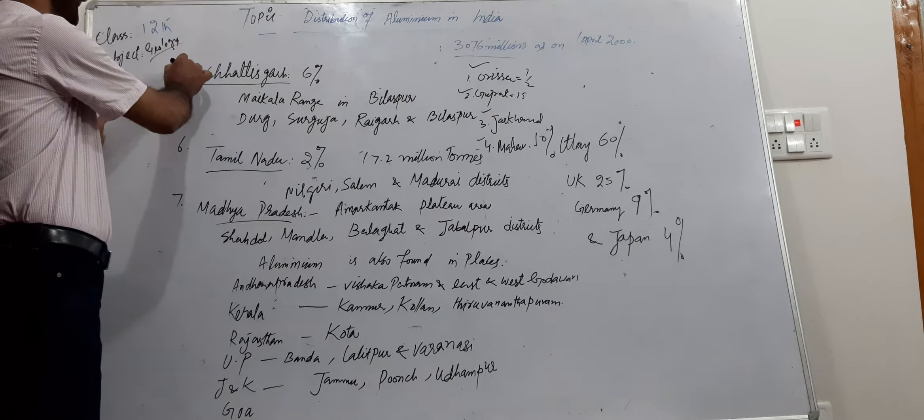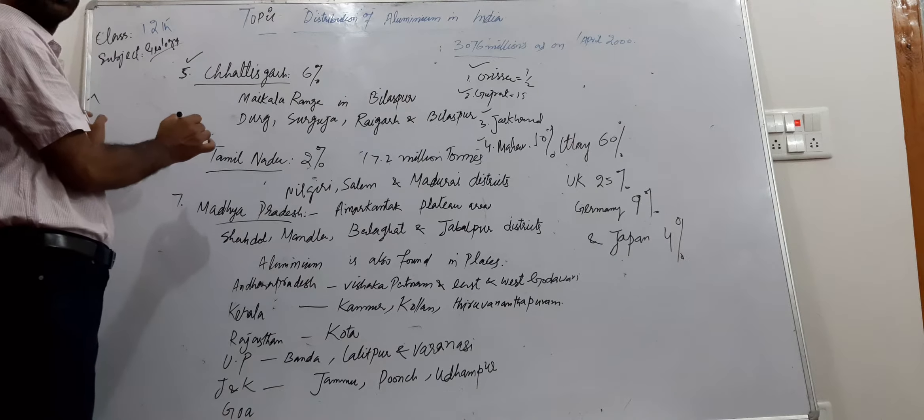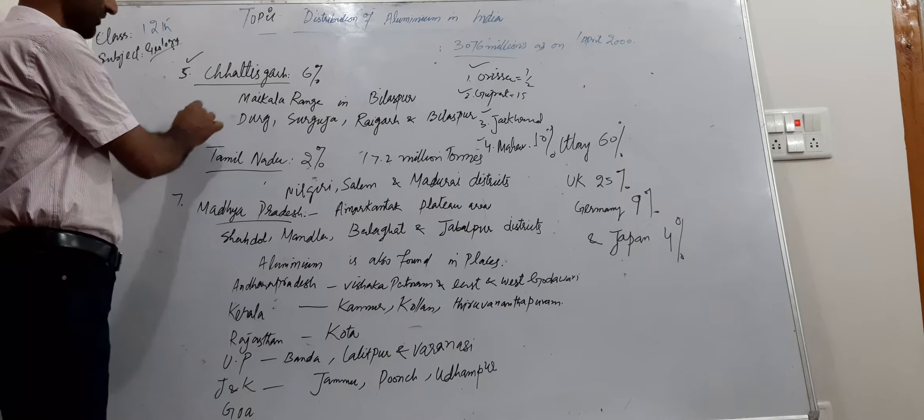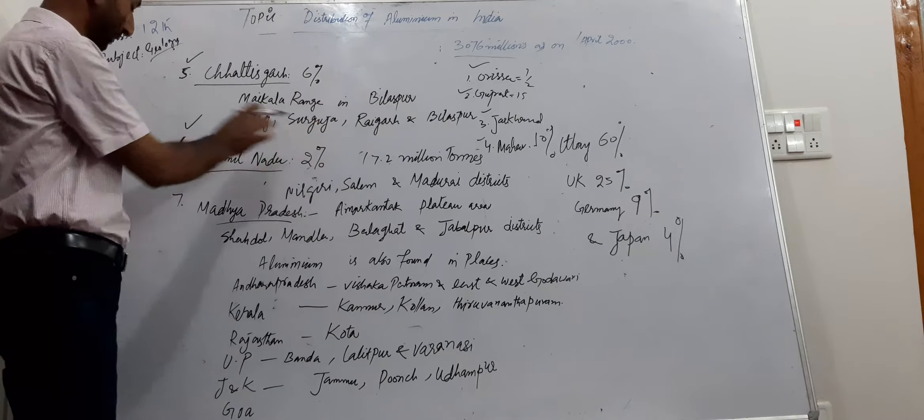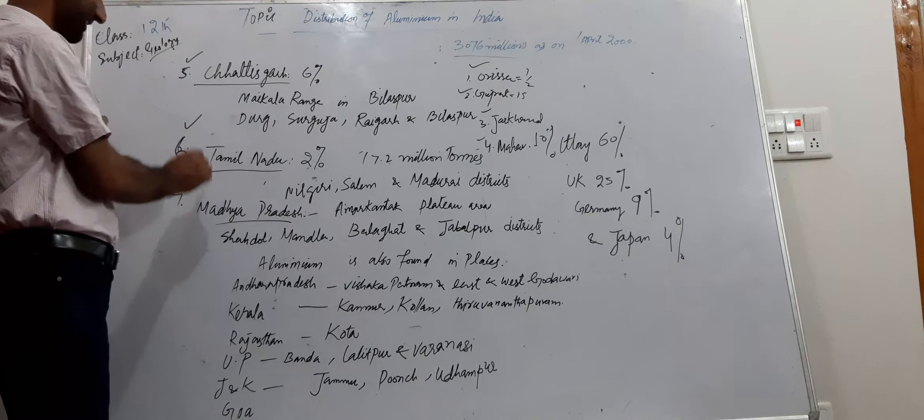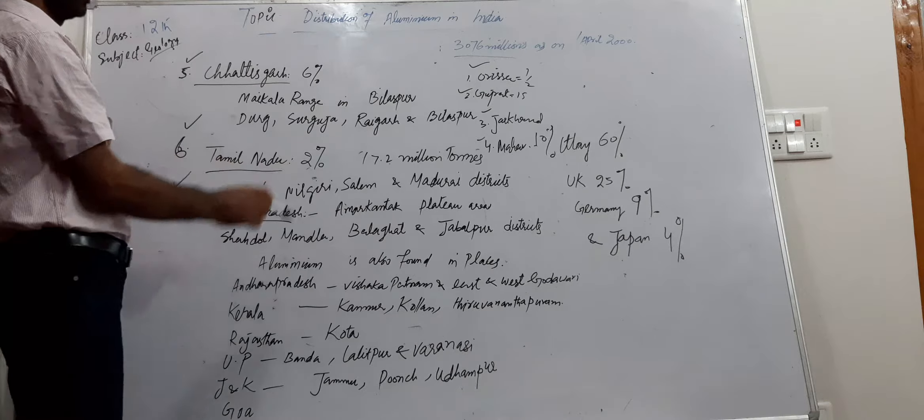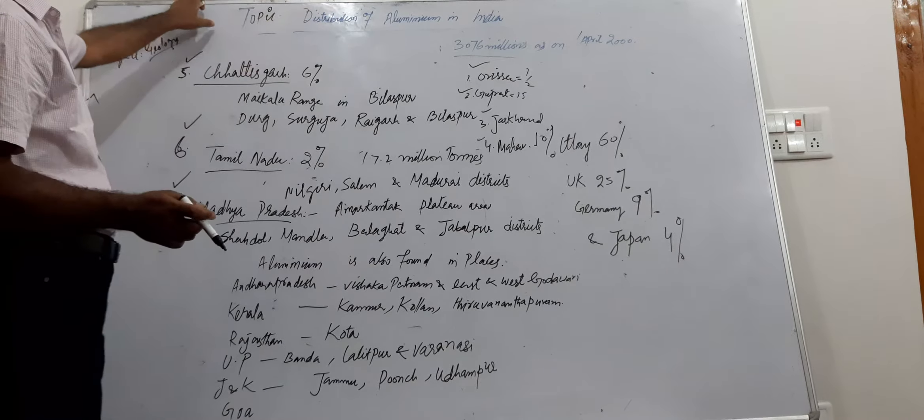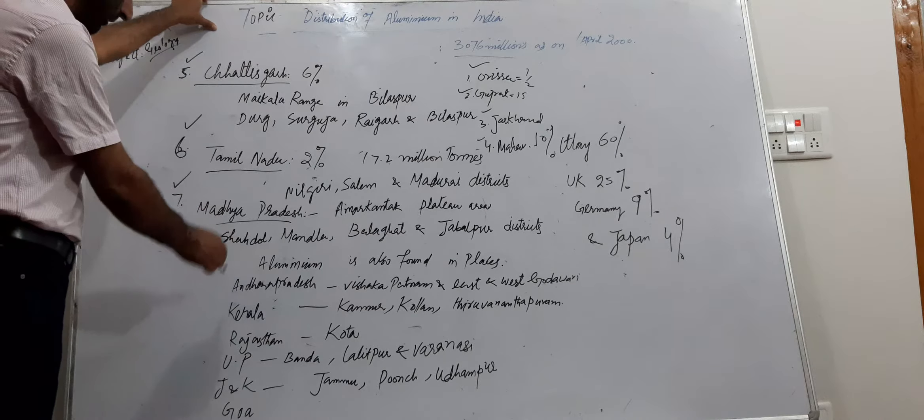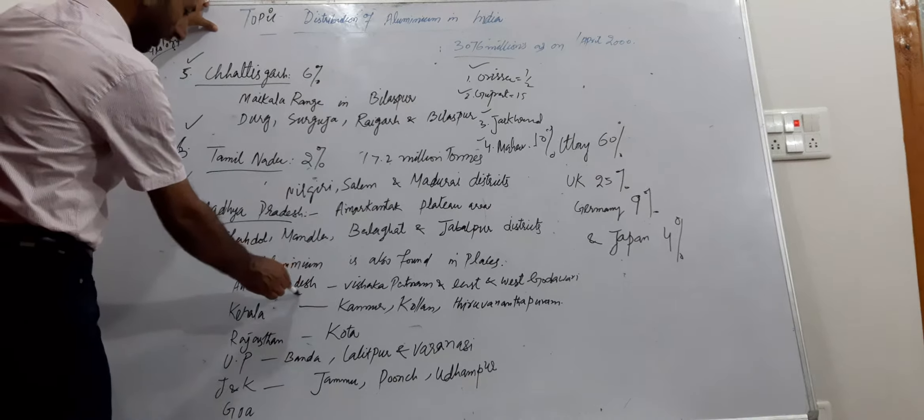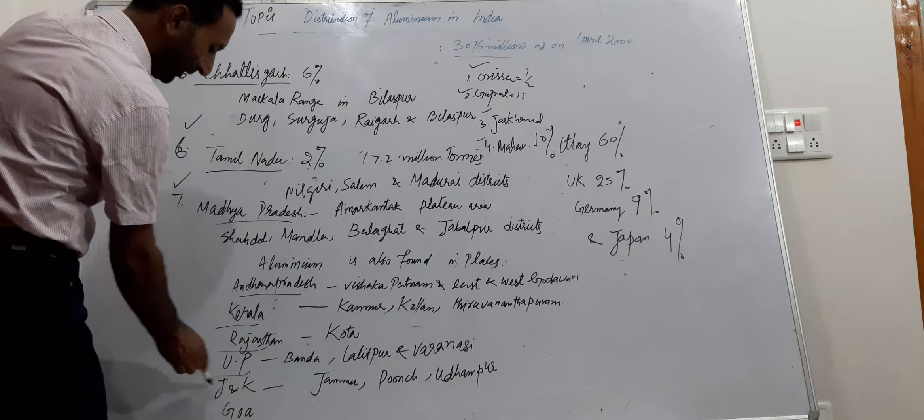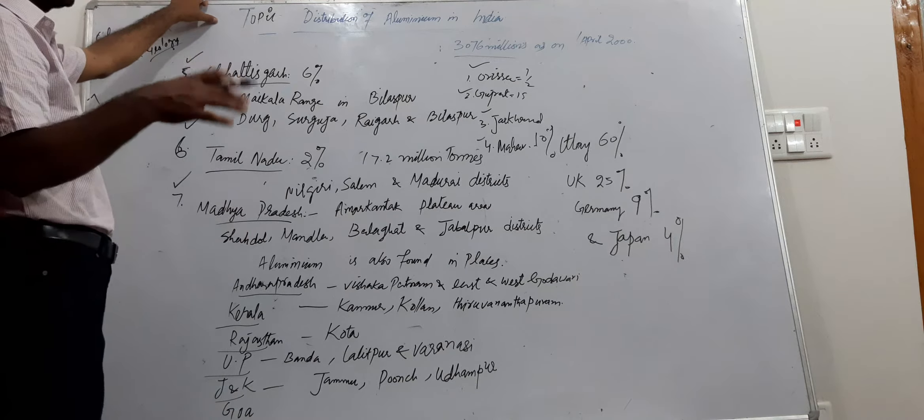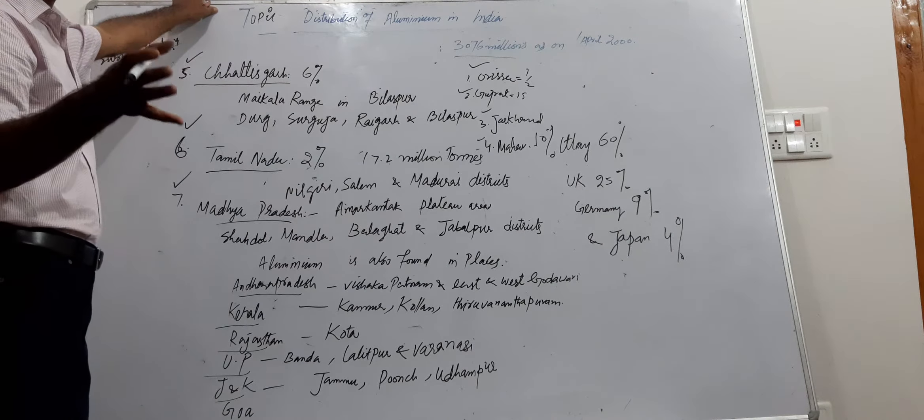So in this class we will try to understand the state which is at fifth place, Chhattisgarh which contributes 6 percent, and the sixth state Tamil Nadu which contributes 2 percent, and the seventh state Madhya Pradesh which contributes the rest. Some other states also contribute: Andhra Pradesh, Kerala, Rajasthan, UP, J&K, and Goa. These are the other states which contribute some amount of aluminum.